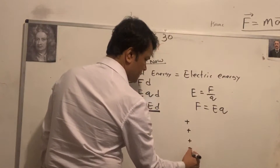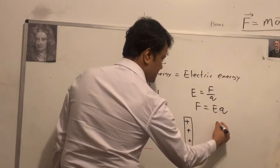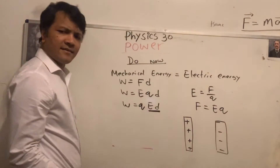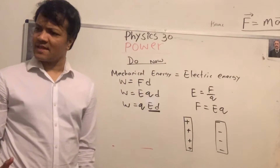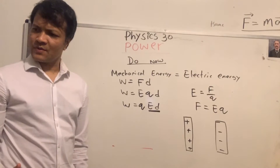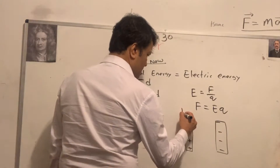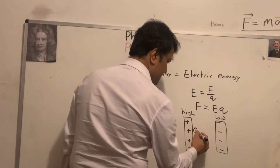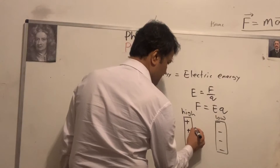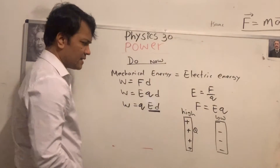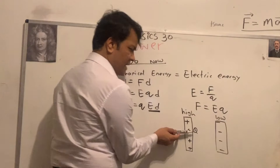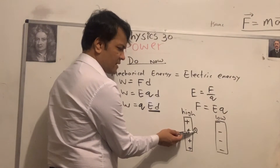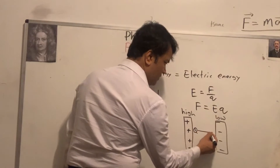I have two plates — a positive plate and a negative plate. Where is the high voltage? High voltage is positive, low voltage is negative. If I have a positive charge q here, it has high potential energy on the positive side.